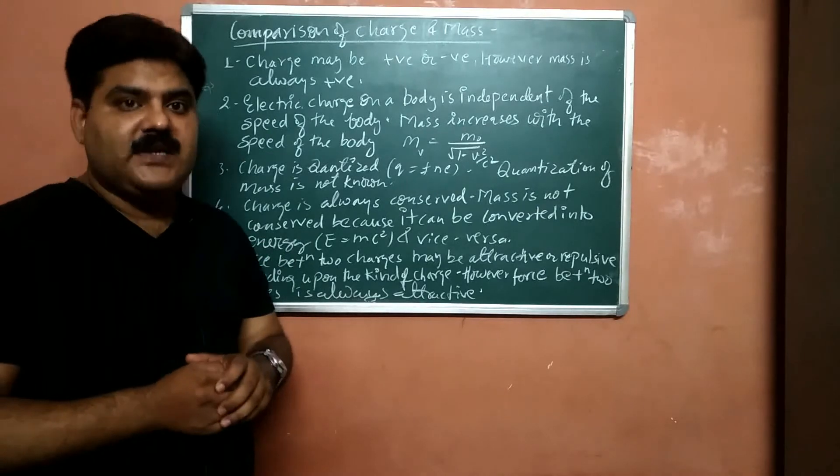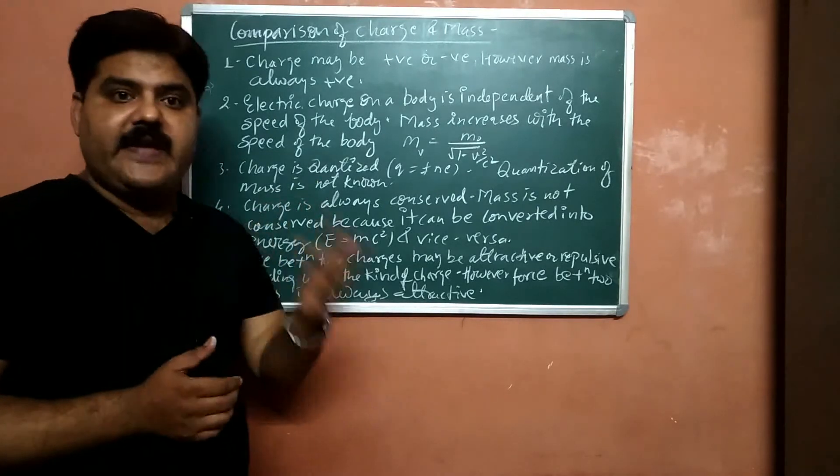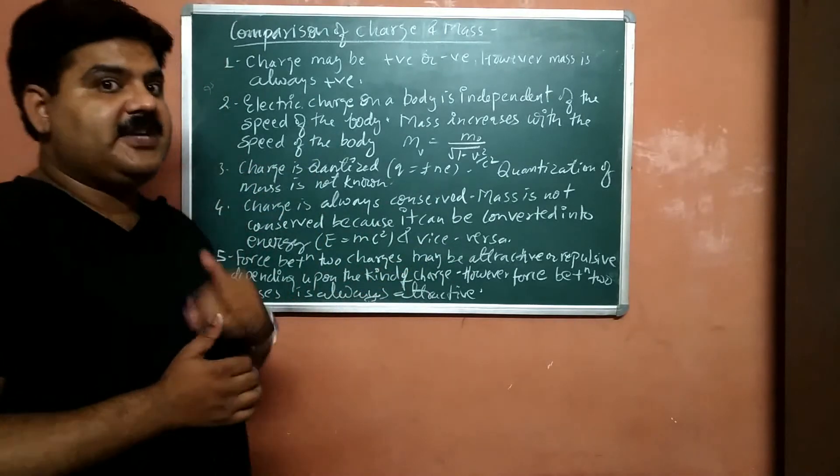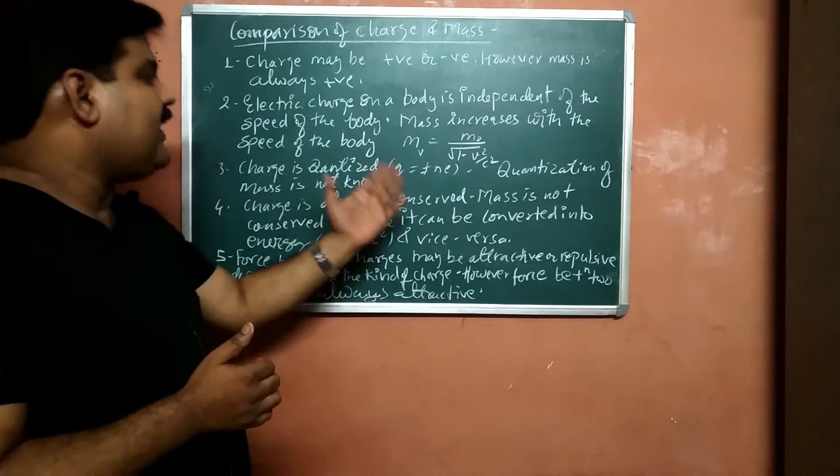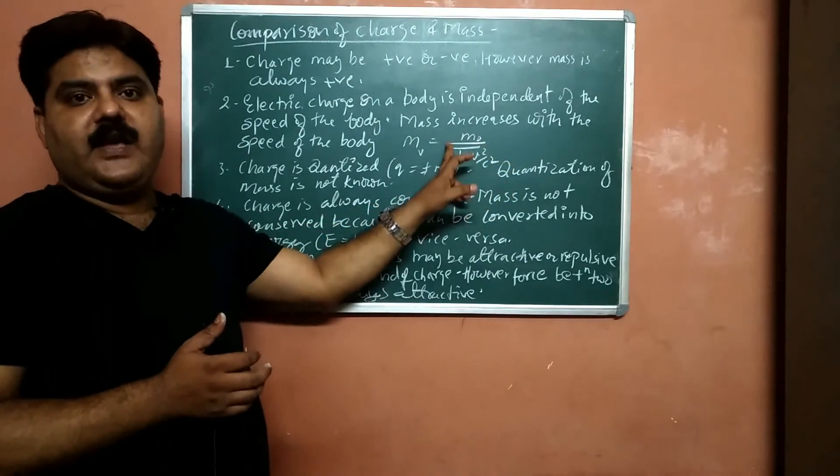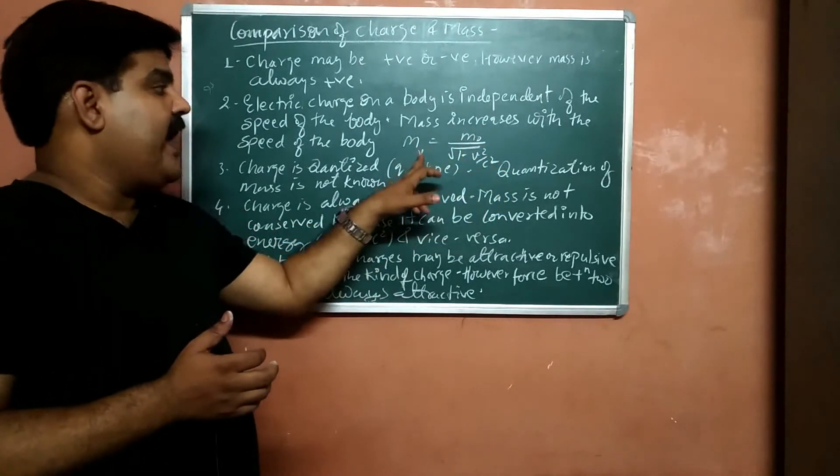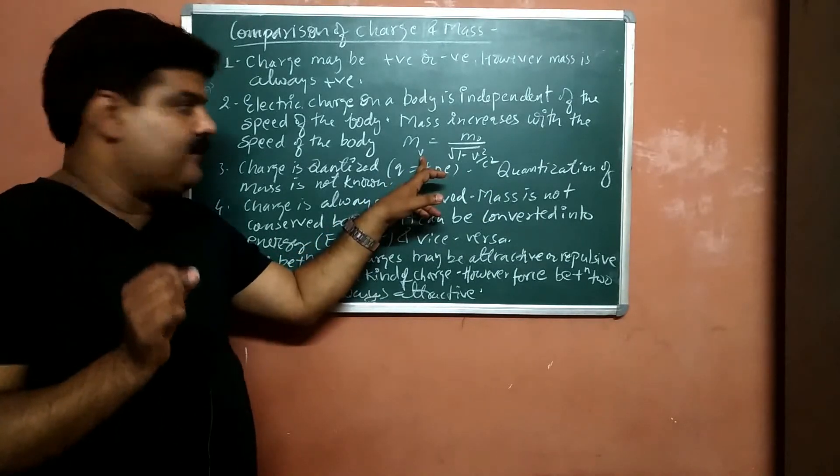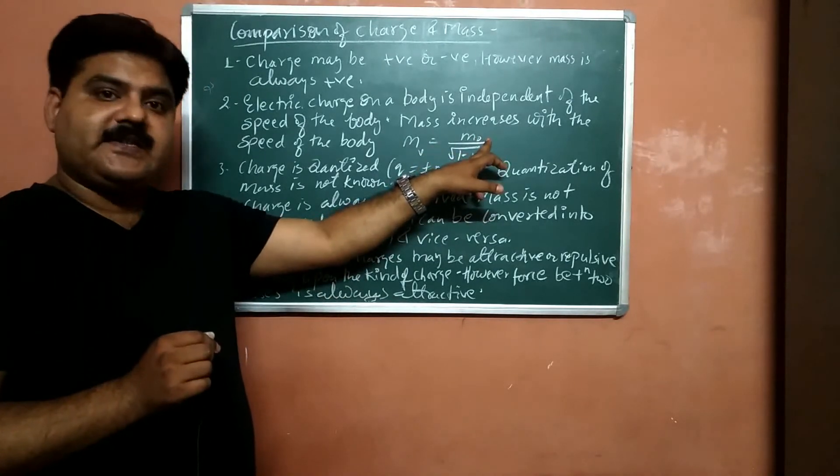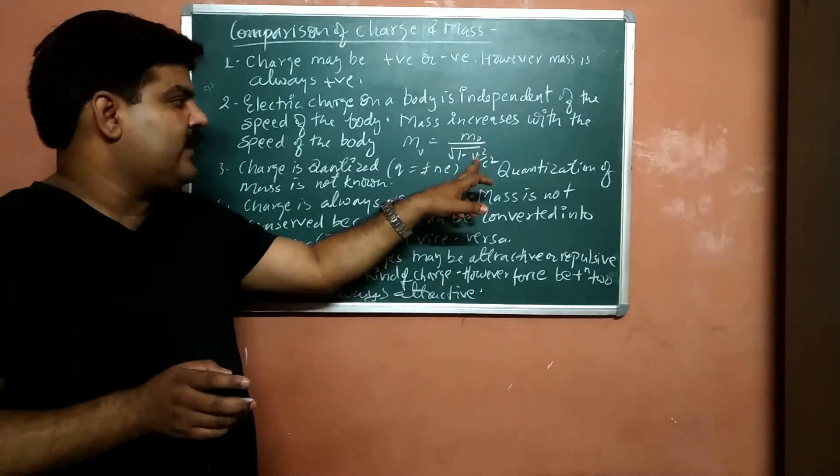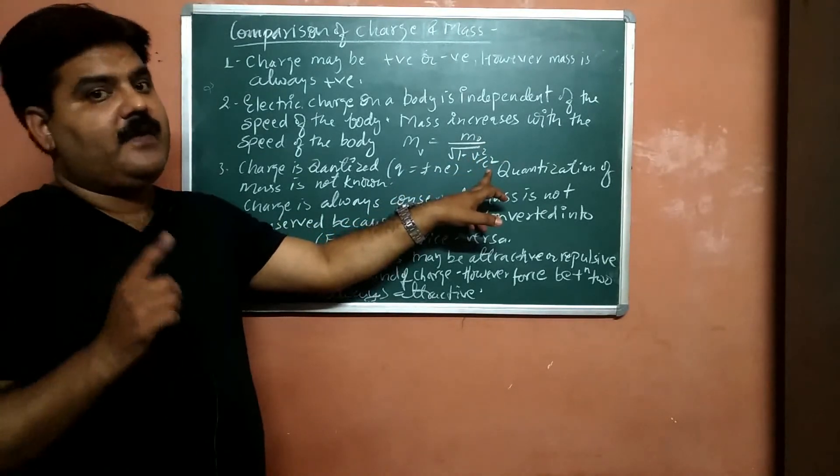But in case of masses, if a body is travelling with the speed of light, then its mass gets increased by a factor. mv equal to m0 upon under root 1 minus v square upon c square, where mv is the moving mass of the body, m0 is the rest mass of the body, v is the velocity of the body by which it is moving, and c is the speed of light.